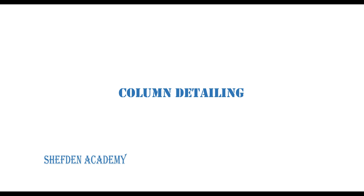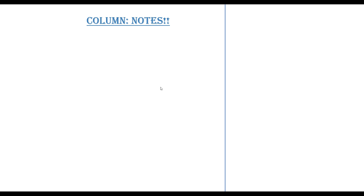In order to detail reinforced concrete columns, there are quite a few things you have to note. The first thing is you have to understand the size of reinforcement generally used in columns. According to the code — whether you are using British Standard or Eurocode — the minimum size of reinforcement allowed for a column is 12mm. You can use 16mm, 20mm, 25mm, or 40mm, depending on what is available in the market.